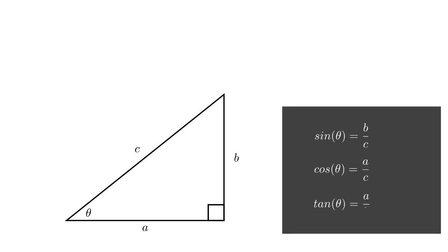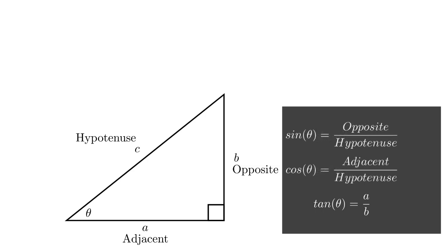Those ratios are so important that we give them special names: sine, cosine, and tangent. And if we name the sides based on their positions rather than just a, b, and c, hypotenuse is the long side across from the right angle. Adjacent is the side adjacent to the angle θ. And opposite is the side opposite the angle θ. Then we can write the ratios in terms of the positions.